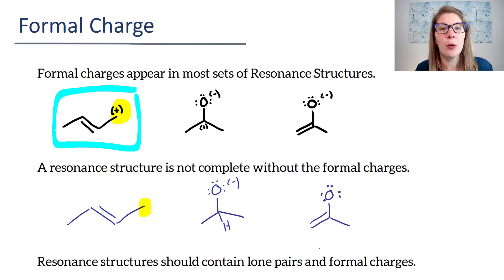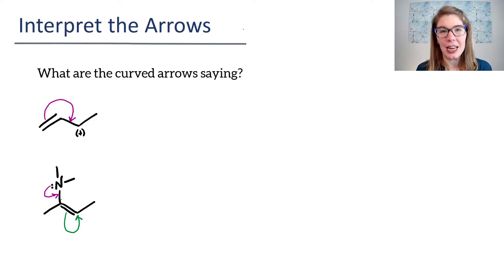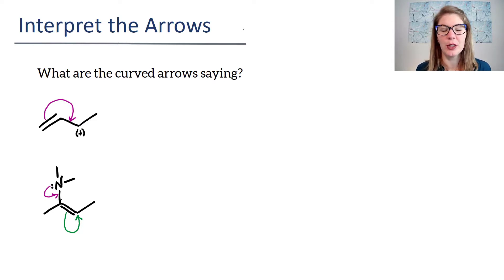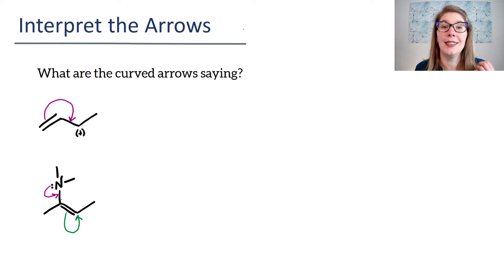Let's get a lot more practice with formal charges and resonance structures. Now I'd like to talk more about the curved arrows. I know in the last video we talked about some of those curved arrows, but we didn't really write a lot down. What I want to do is show you exactly what's happening with the curved arrows, because honestly you cannot see this too much.